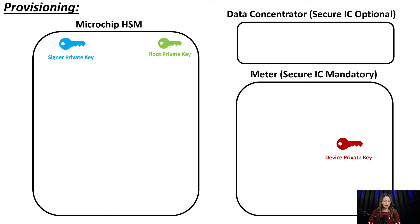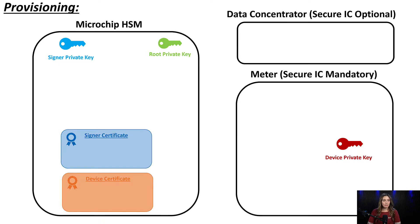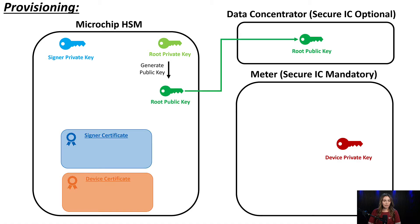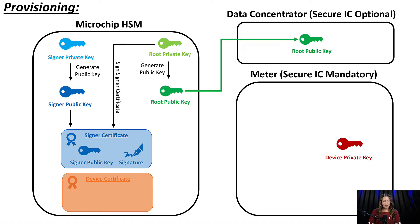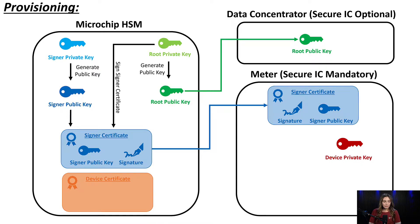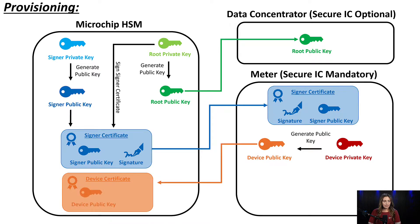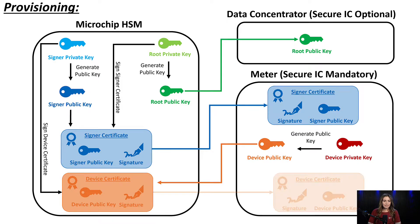To provision this use case, we'll have a signer private key, a root private key, and a device private key. We'll also be creating two compressed certificates. First, we'll generate a root public key from the private key and load it onto the data concentrator. Next, we'll generate a signer public key, load it onto the signer certificate, and sign it with the root private key, then load it onto the meter. Lastly, we'll create the device certificate — generate a device public key, place it on the device certificate, sign it with the signer private key, and place it on the meter as well.